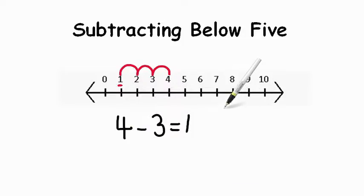Another way you might see your number sentence is like this: 4 minus 3, and this line here, when it shows it like this, it means the same as equals, and it's 1. 4 minus 3 equals 1. Great job.